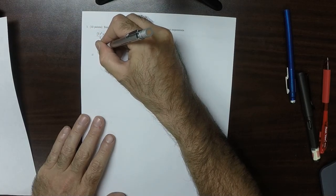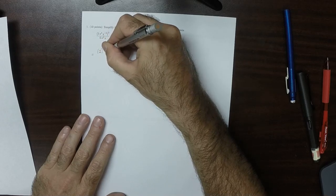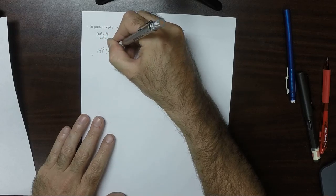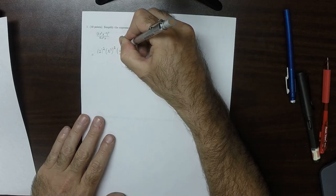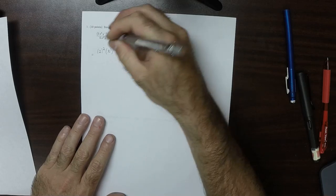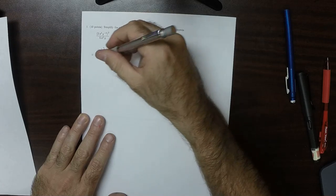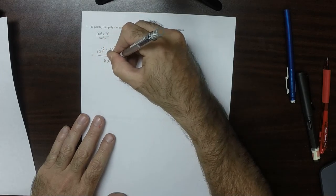that would be 2 squared and then x cubed squared and then y to negative 2 squared over 6x squared y.